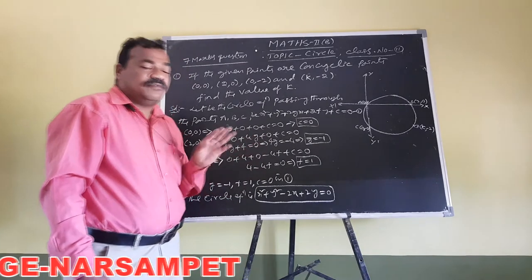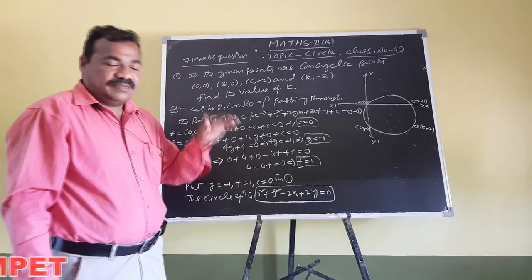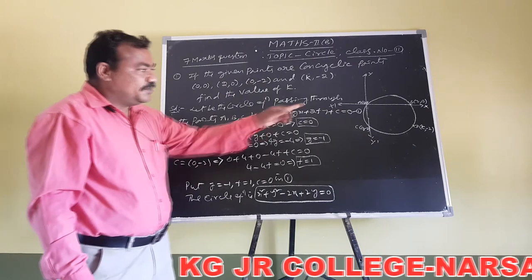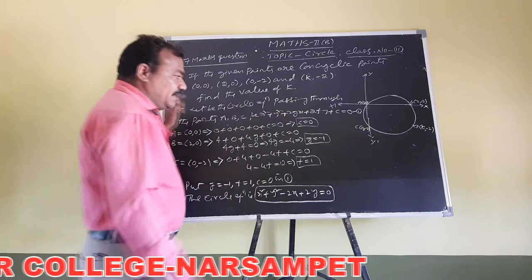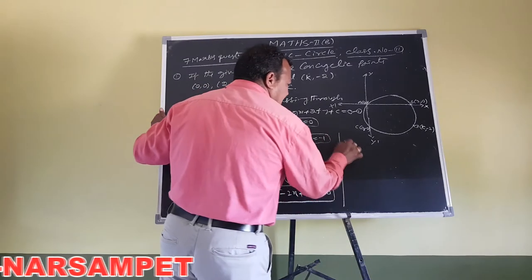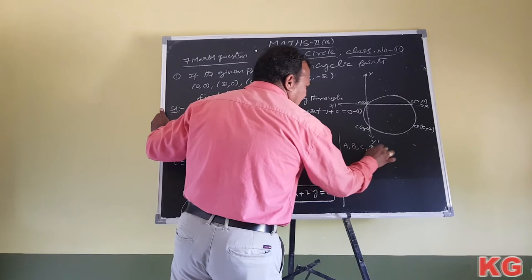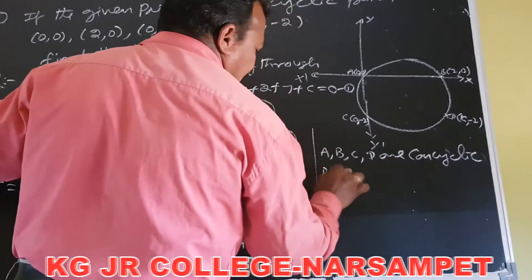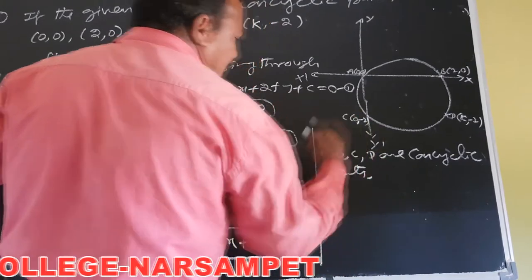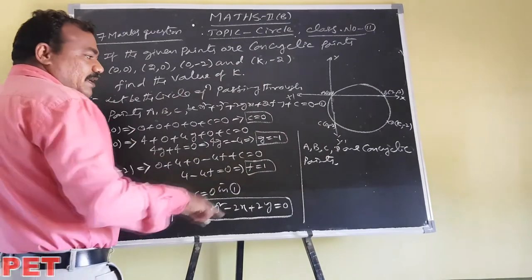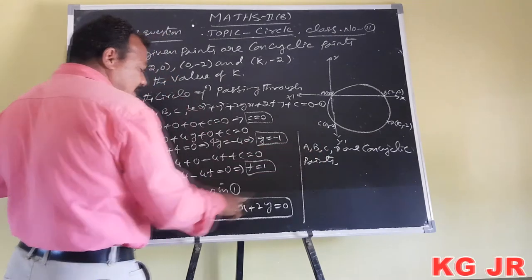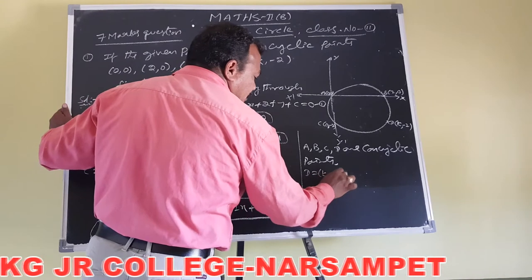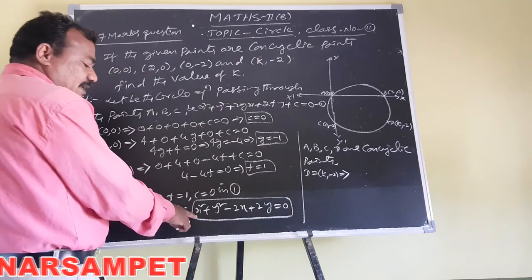Now we have to find the value of k. Given that all the points are concyclic, the fourth point D=(k,-2) also lies on the circle. Concyclic points means all four points lie on the same circle. So D=(k,-2) must satisfy the circle equation.